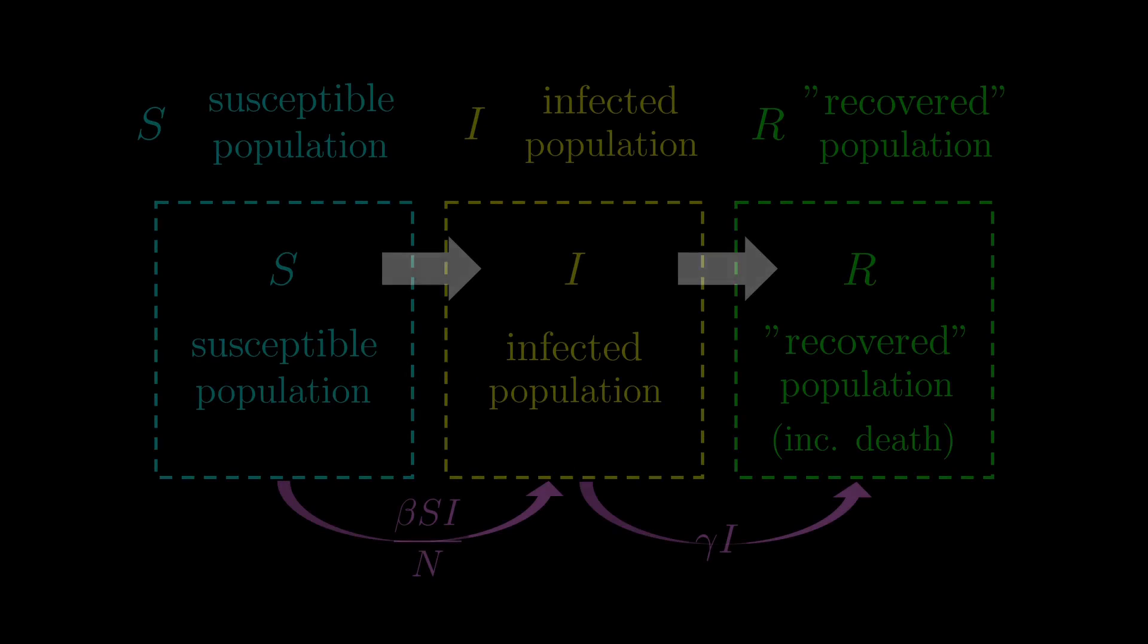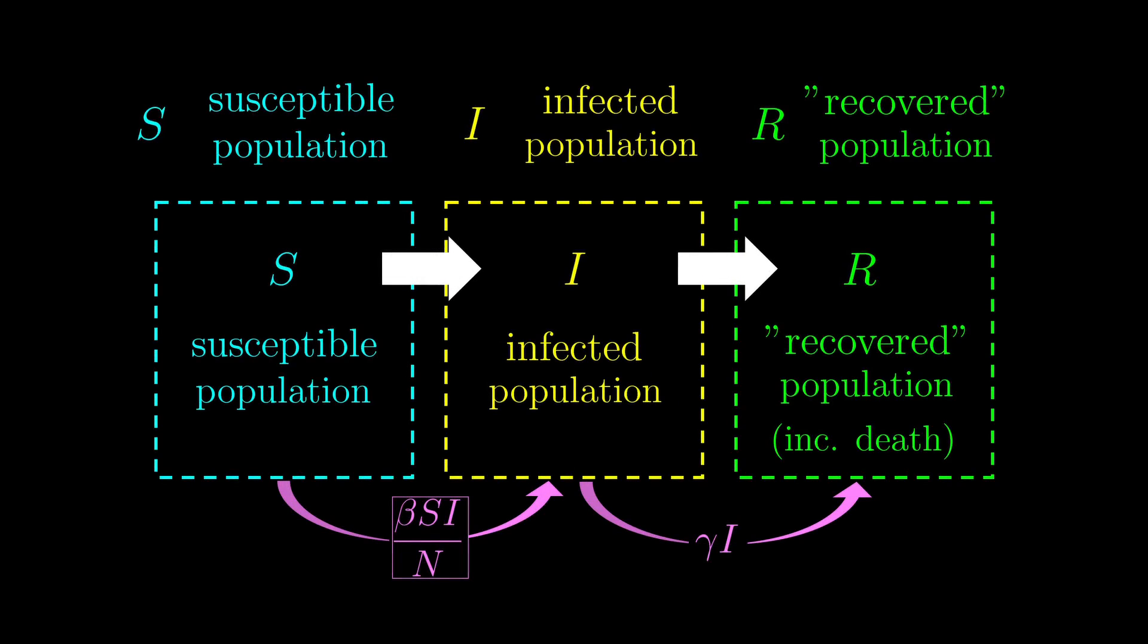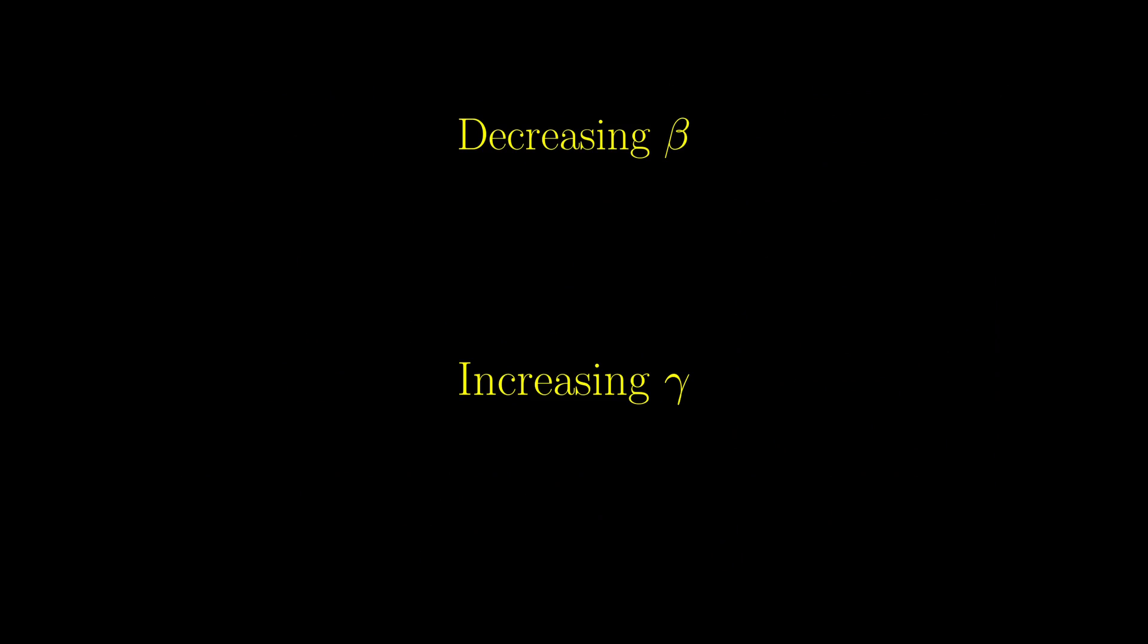We can approach this in two ways, namely, decreasing beta and increasing gamma. Recall this model that we saw previously. Beta appears in the first transition and can be thought of as the likelihood that a susceptible individual becomes infected. And gamma appears in the second transition and can be thought of as the likelihood that an infected individual recovers or dies. So to decrease beta is the same as decreasing the likelihood of infection, and increasing gamma is the same as increasing the rate of recovery.